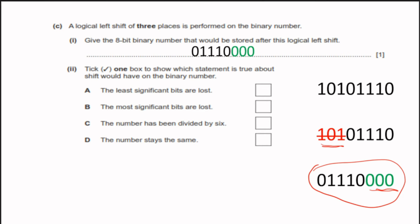Part D: tick one box to show which statement is true about the effect the shift has on the binary number. Option A — the least significant bits are lost — is not true. Option B — the most significant bits are lost — is true. These three bits are lost in the left shift. Option C — the number has been divided by six — is incorrect. Option D — the number stays the same — is also incorrect.